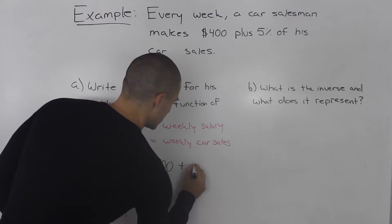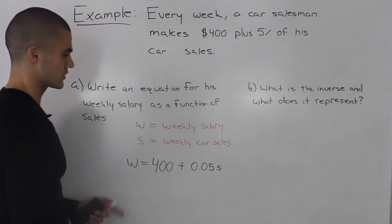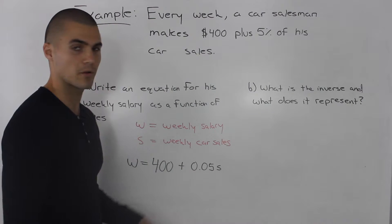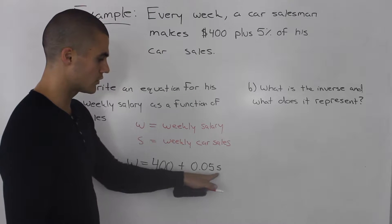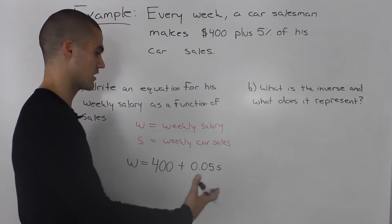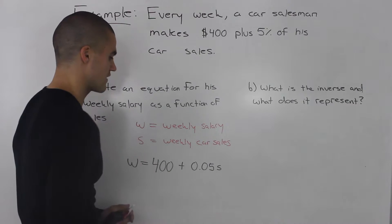We can put 0.05 times S. For example, if his weekly car sales were, this is a small number, but $100, $100 times 0.05 is $5. $5 is 5% of 100. Then his weekly salary would be $400 plus that $5.